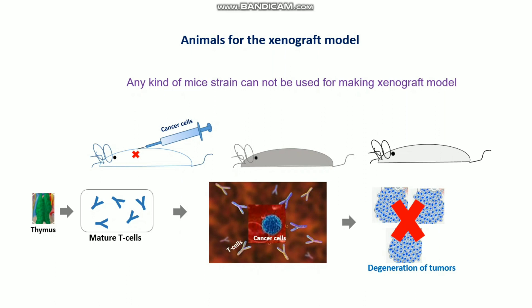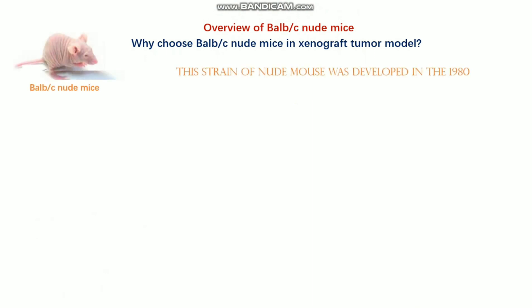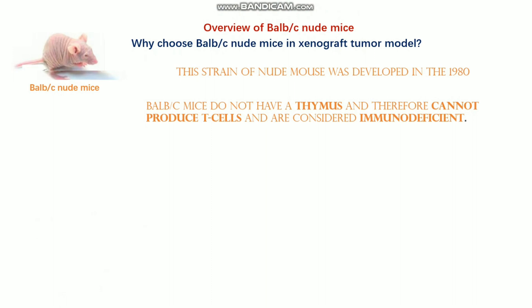If you use any mice other than those designated for the xenograft model and inject cancer cells, the cancer cells cannot form a tumor inside the animal. This is why you need to choose the right mice. The BALB/c nude mice are the specific kind of mice generated for xenograft tumor model generation. This strain of nude mice was developed because it is considered immunodeficient — BALB/c nude mice do not have a thymus, and therefore T cells cannot mature in these mice.